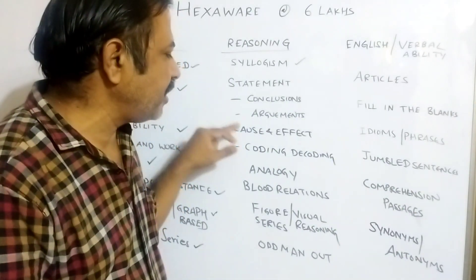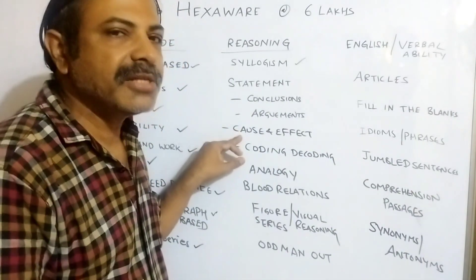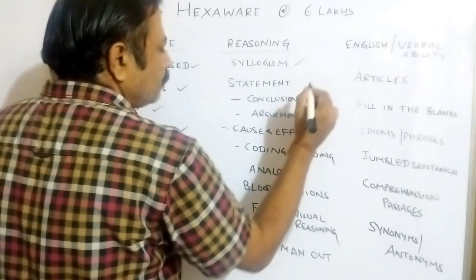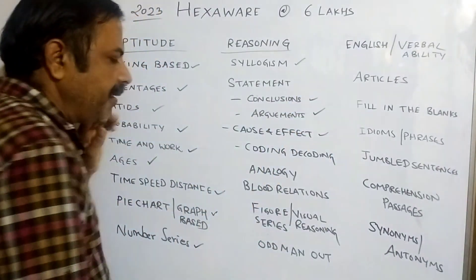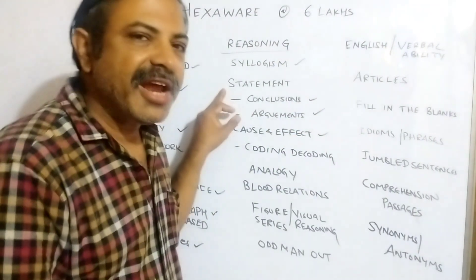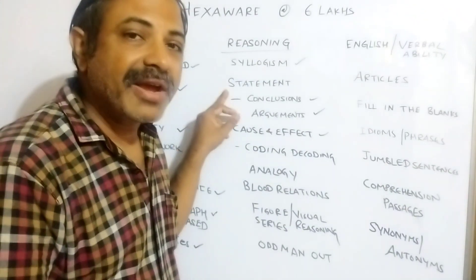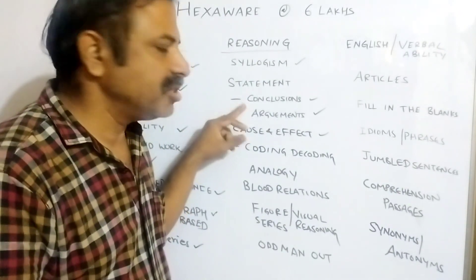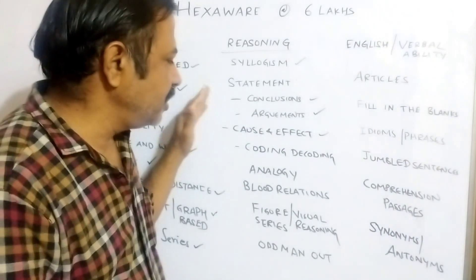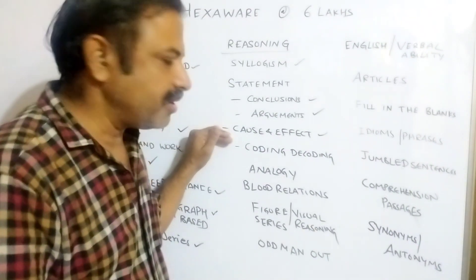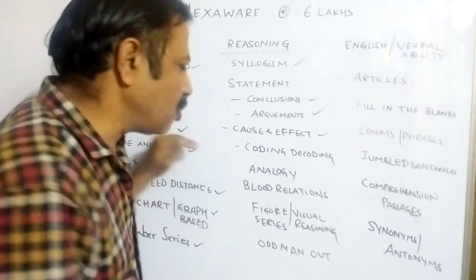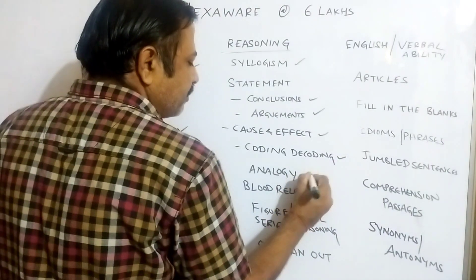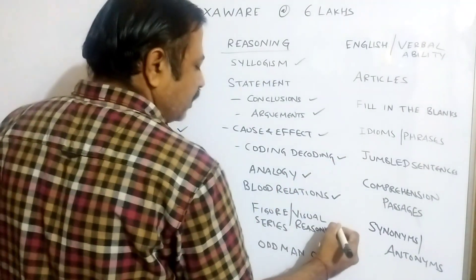Statement and conclusion, statement and argument — these are important. Also statement and course of action, implicit assumptions, and cause and effect — causes and facts — these are important things to look into. Coding and decoding is a common topic which everyone knows, and blood relations as well.